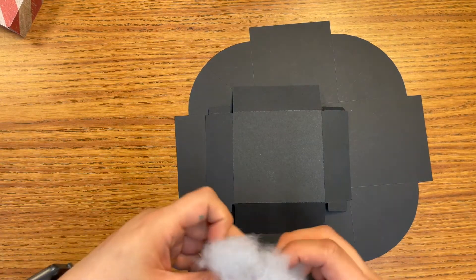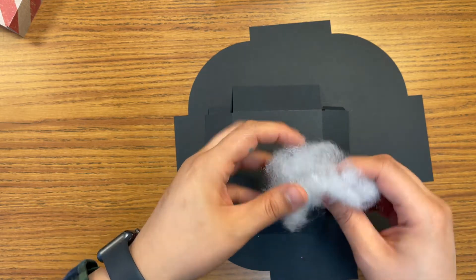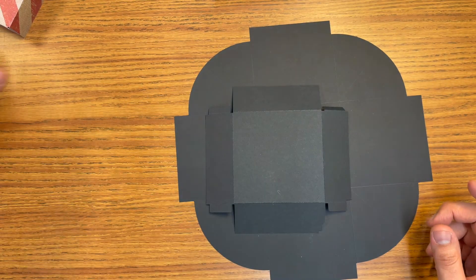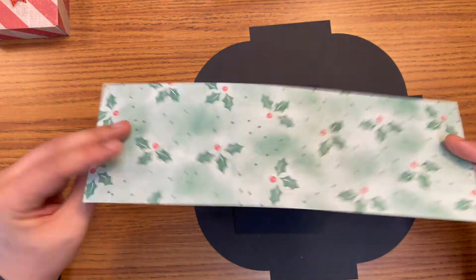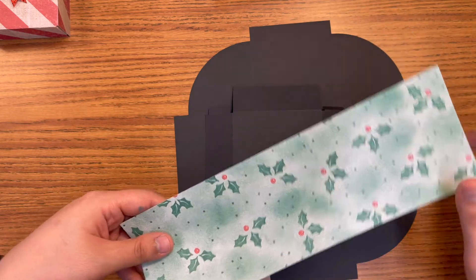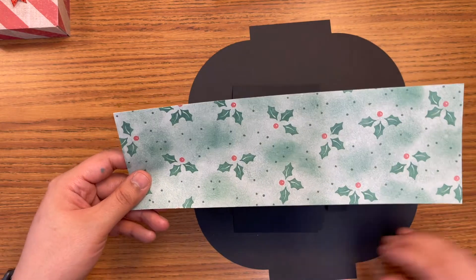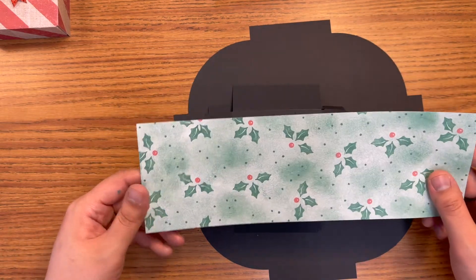You'll be getting this little tuft of polyfill that you could use for like a little snow effect. You will also be getting a slip of scrapbook paper, a little decorative paper, that you could cut down to the size of the sides if you want, or if you want to just do something totally different with it. That's all up to you.